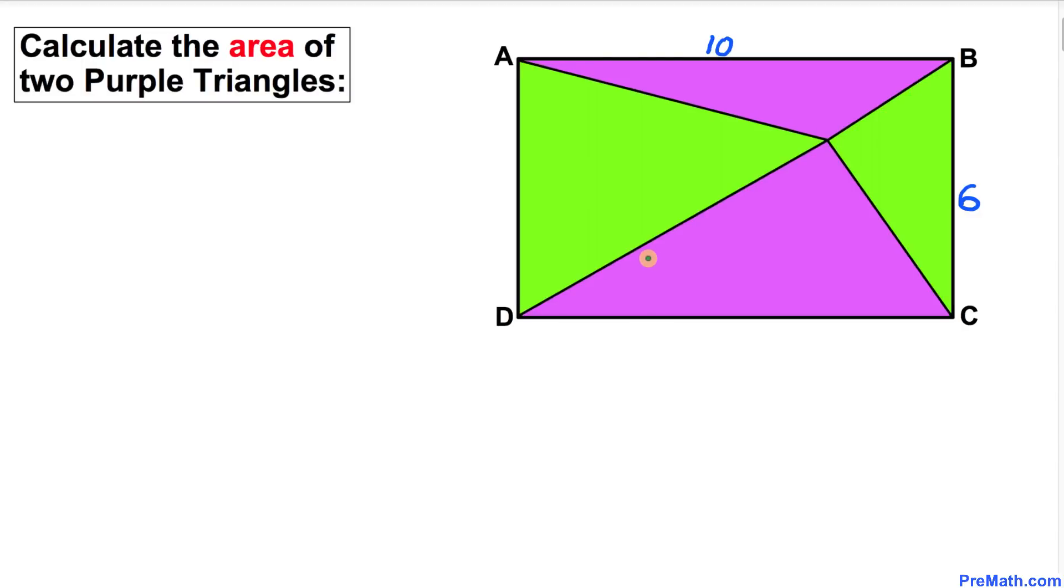Welcome to PreMath. In this video tutorial, we have rectangle ABCD whose length is 10 and width is 6. This rectangle consists of two purple triangles as well as two green triangles.